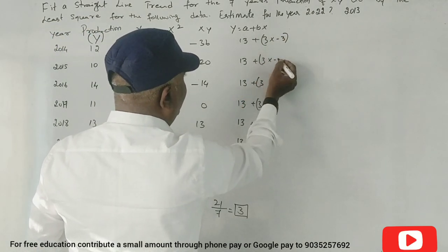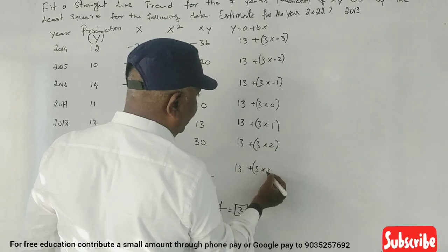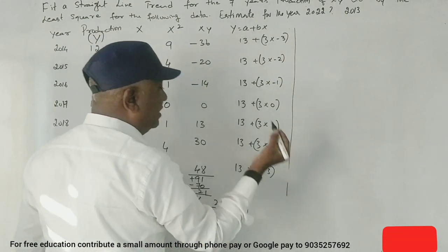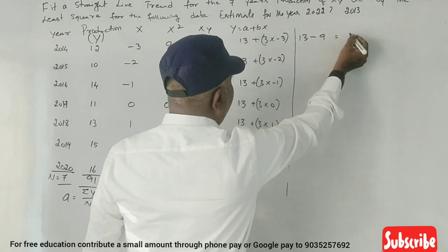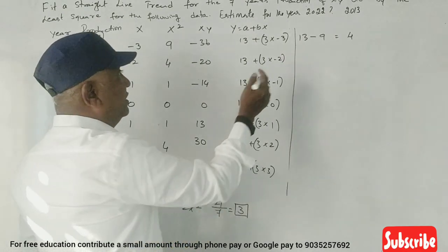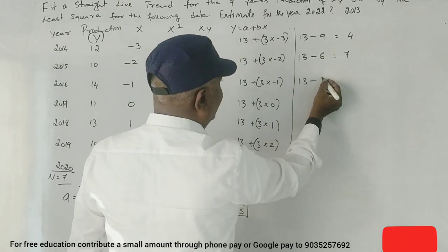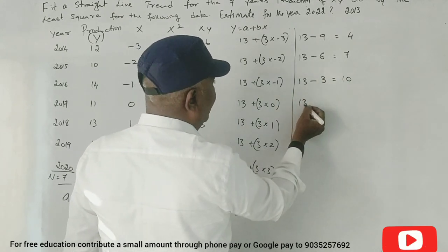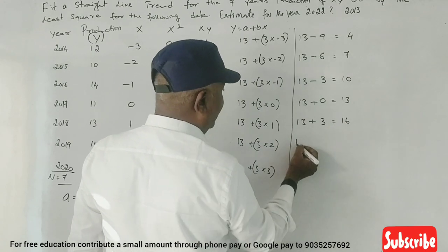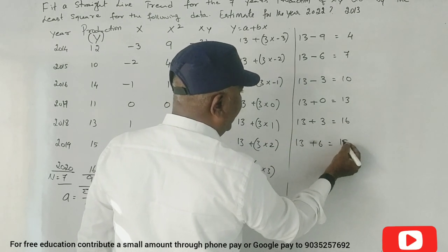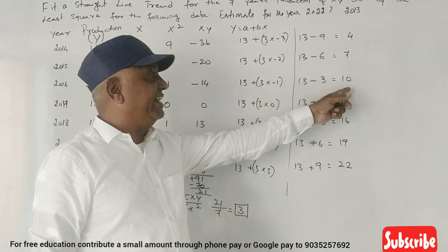So Y equals 13 plus 3 times X. For X equals minus 3, minus 2, minus 1, 0, plus 1, plus 2, plus 3. This gives trend values: 13 plus 3 into minus 3 is 4, then 7, 10, 13, 16, 19, 22. Correct? I get 4, 7, 10, 13, 16, 19, 22.